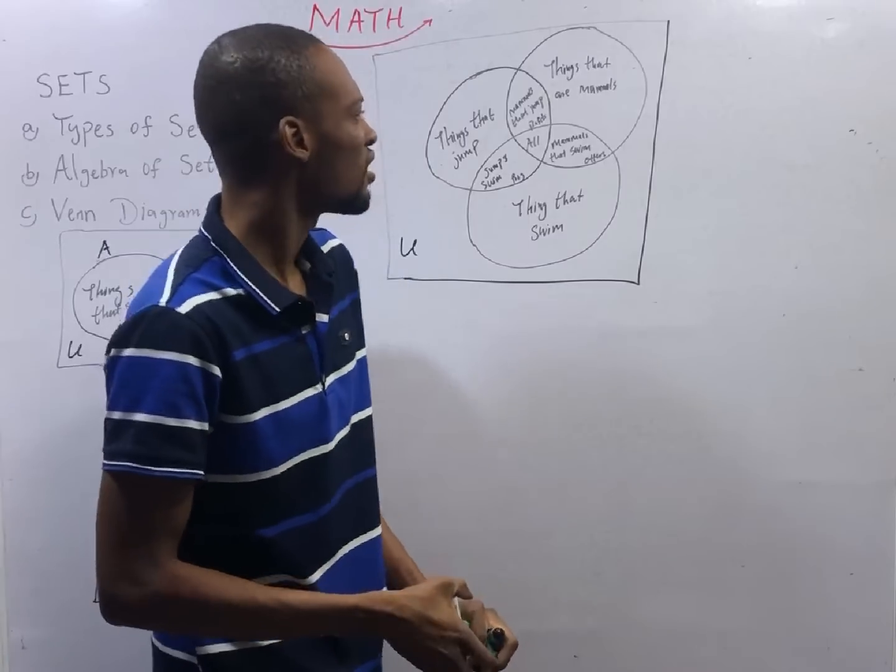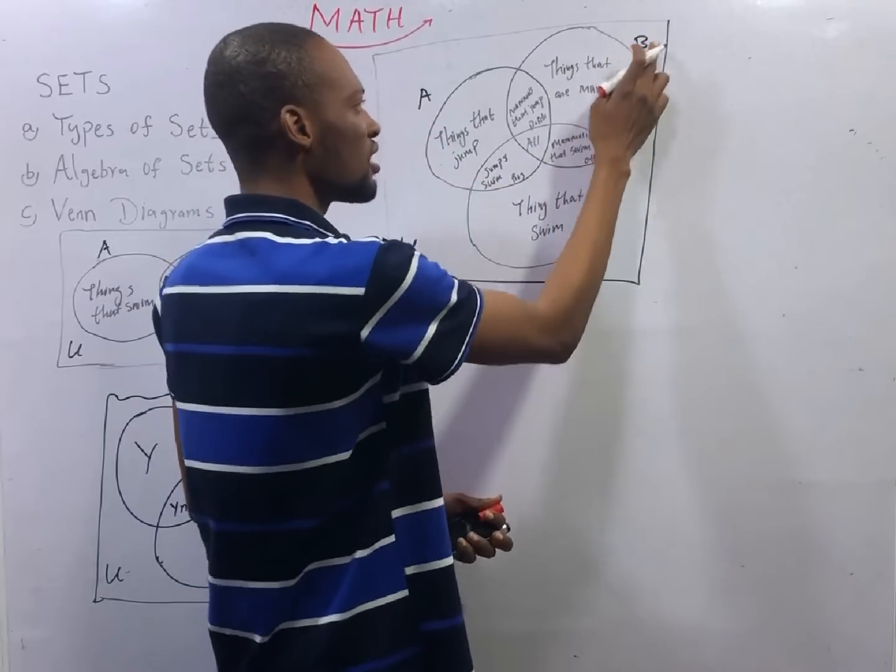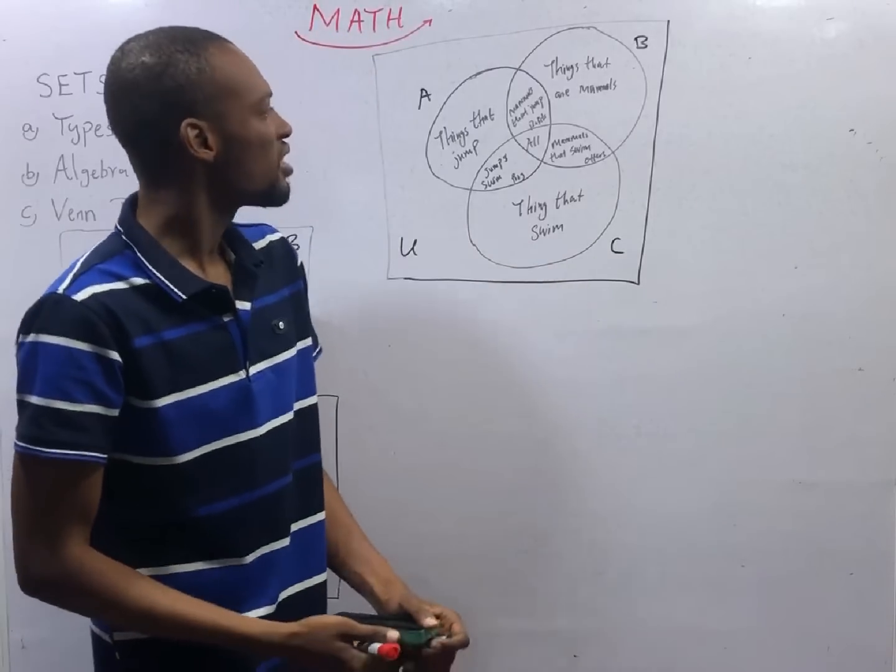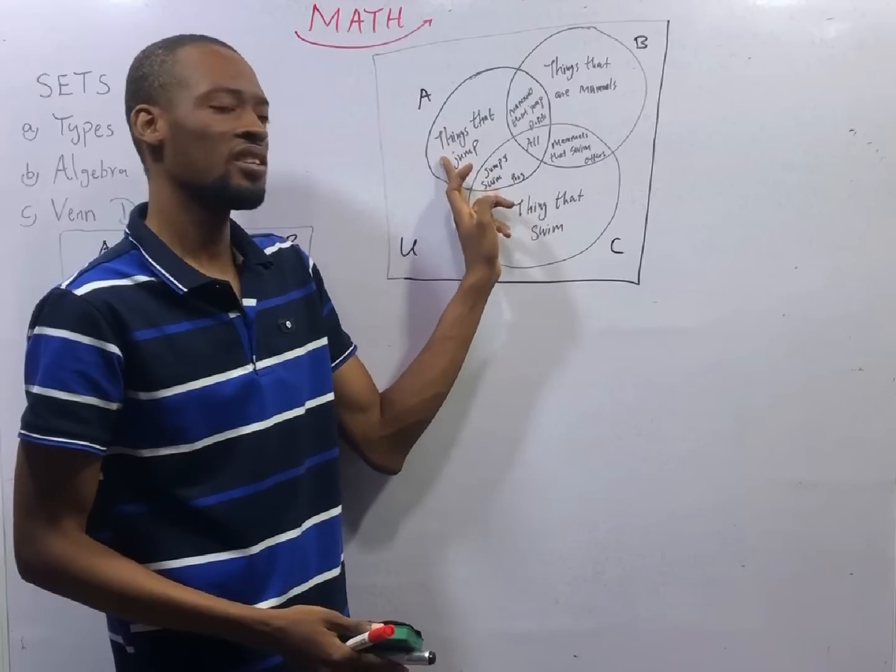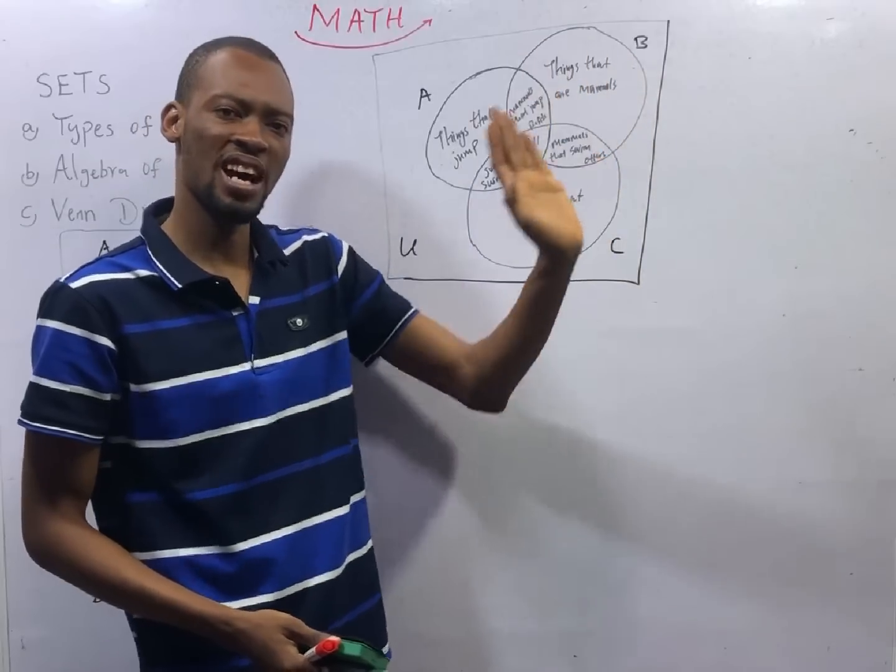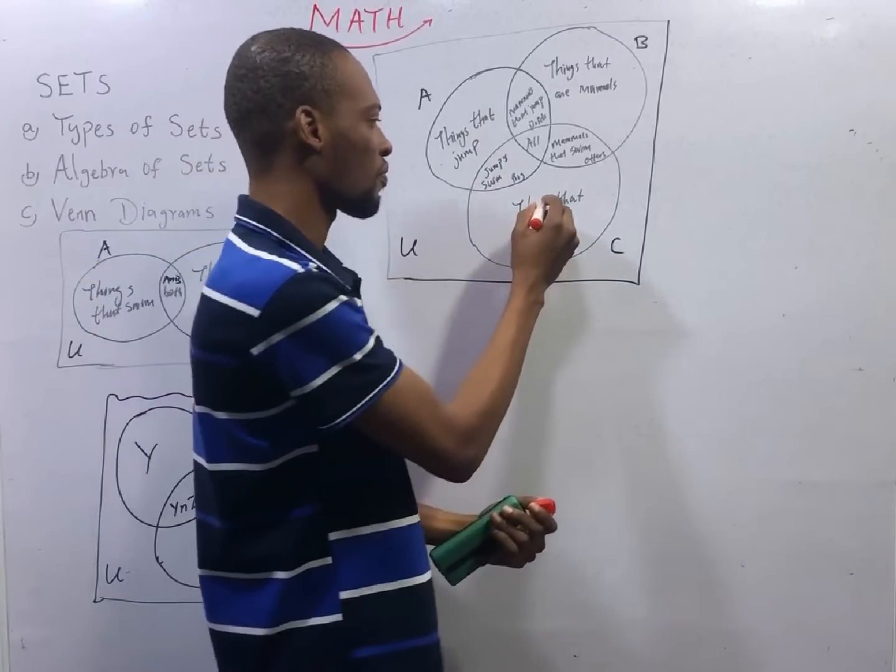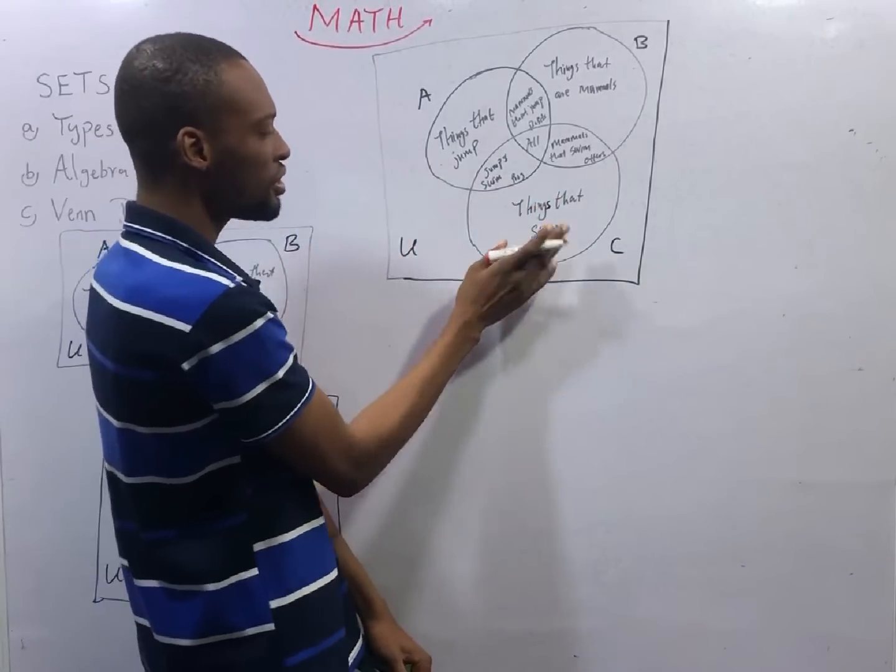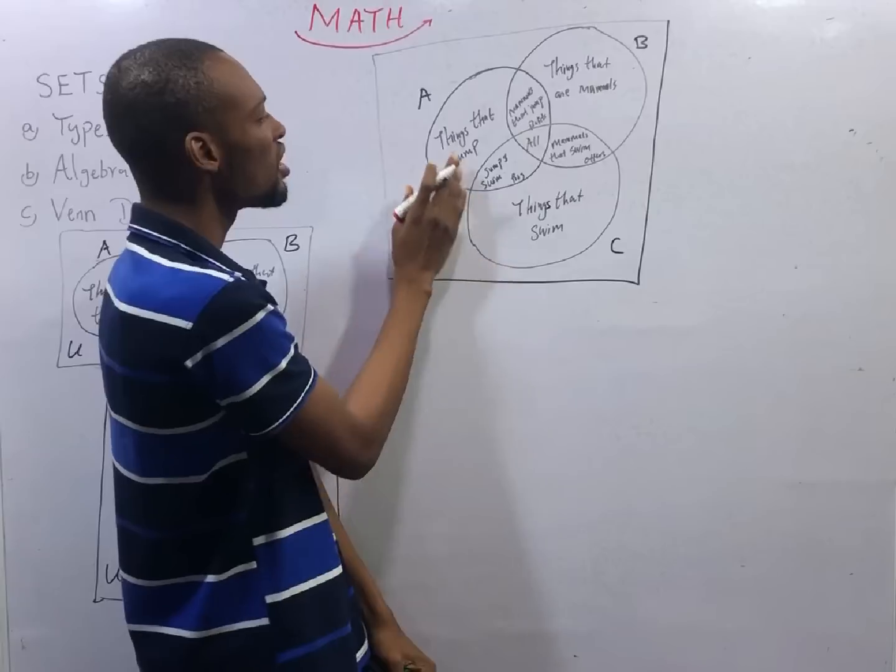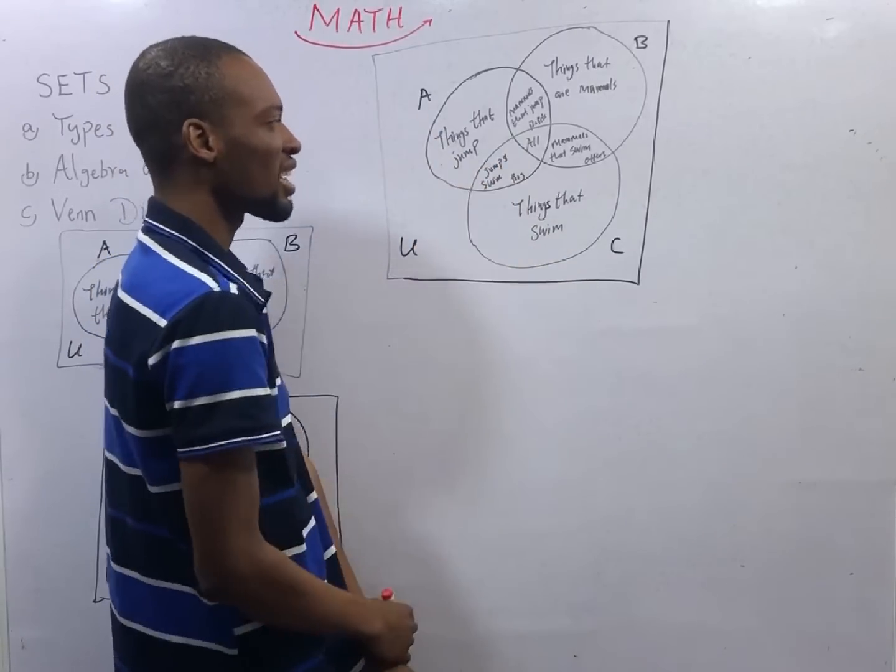For 3 sets, let's call this universal set, let's call this set A, let's call this set B, and let's call this set C. If set A represents things that jump, and set B represents things that are mammals, and set C represents things that swim. Between A and B, this part will simply represent things that jump and are mammals. We can say frog as an example.